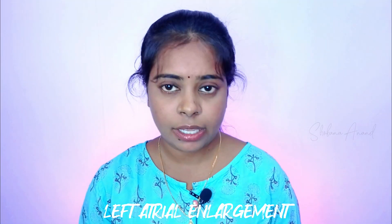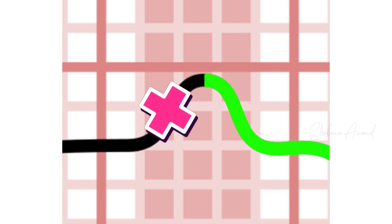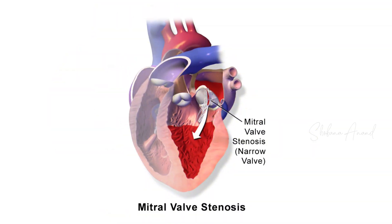Now let's see the left atrial enlargement. It affects the second half of the P-wave, not the first half. Left atrial enlargement — the main cause of this is mitral stenosis.